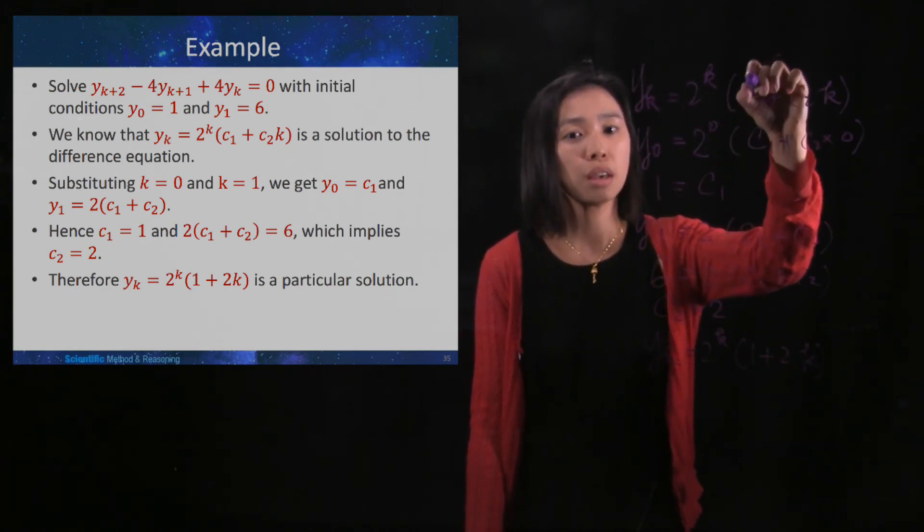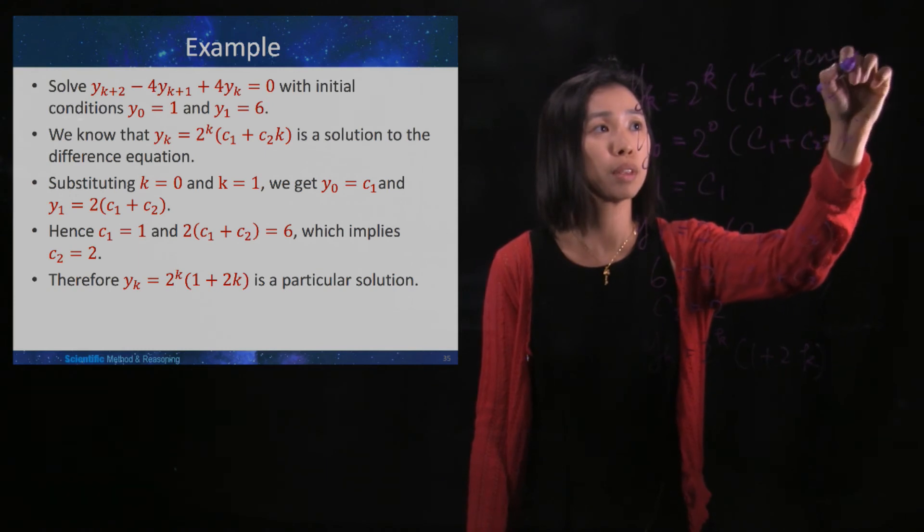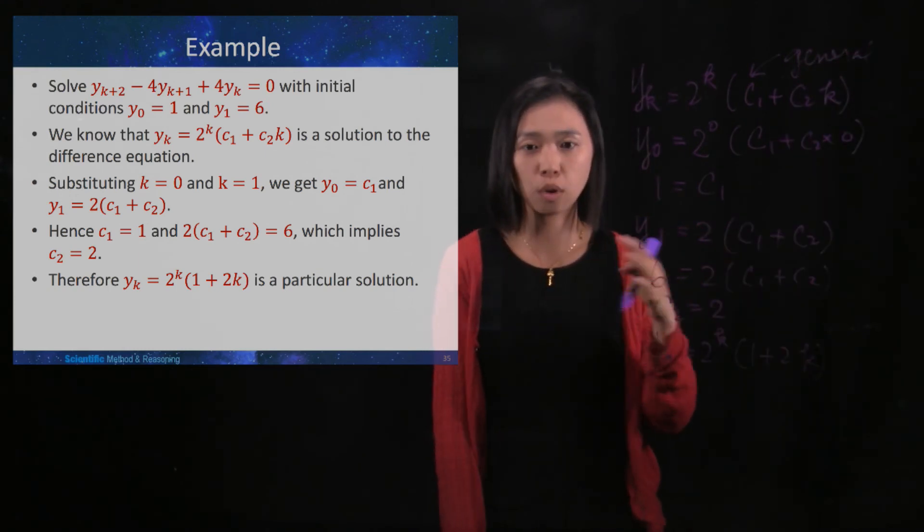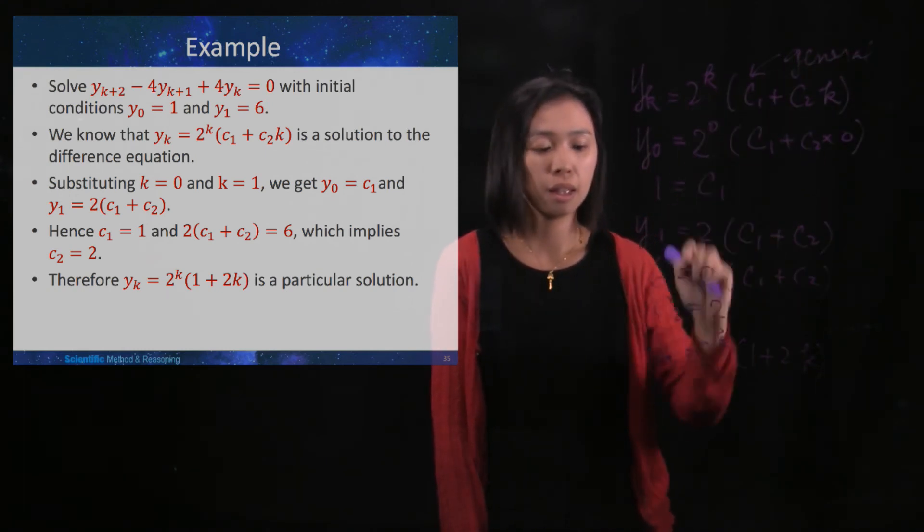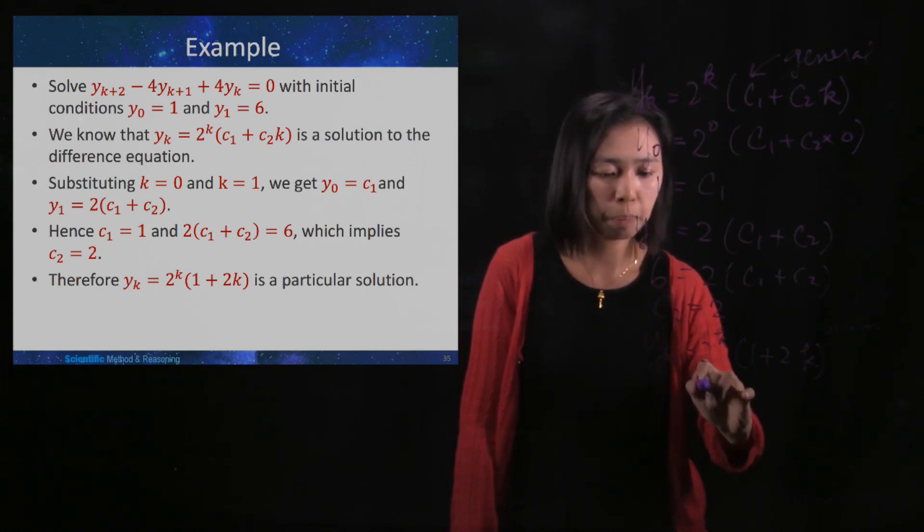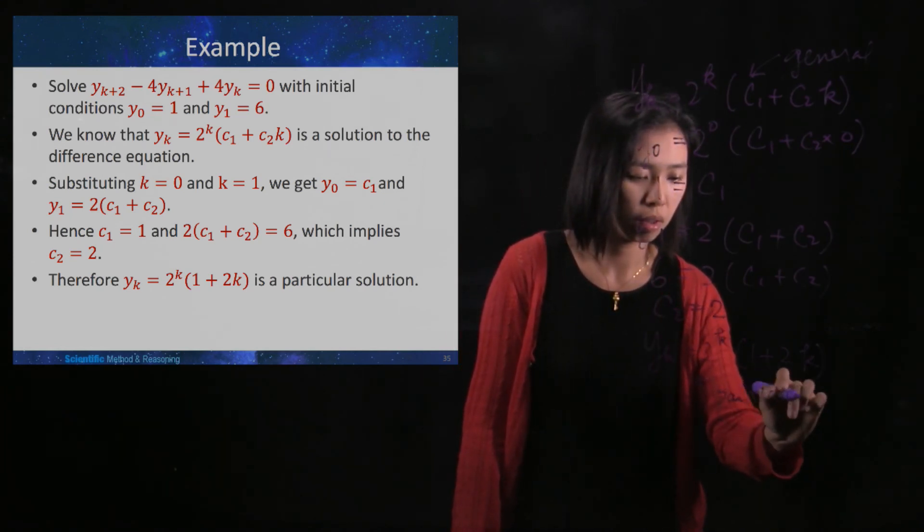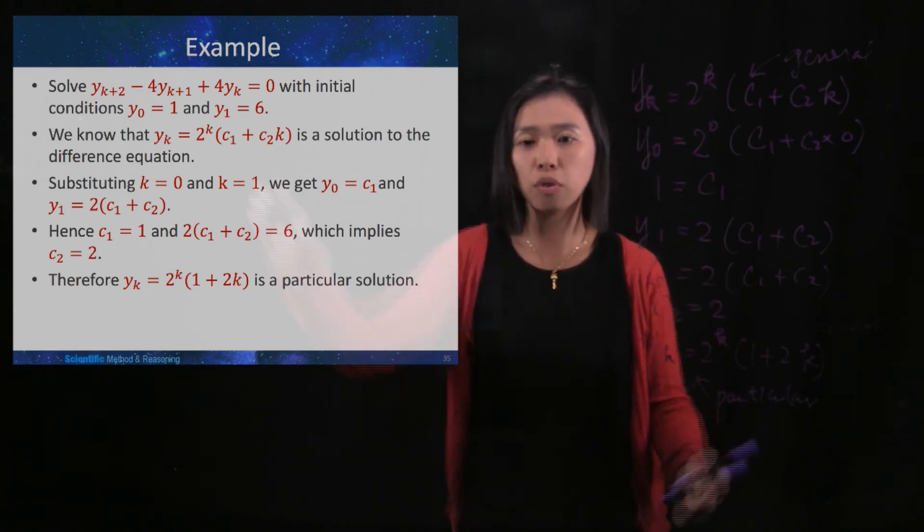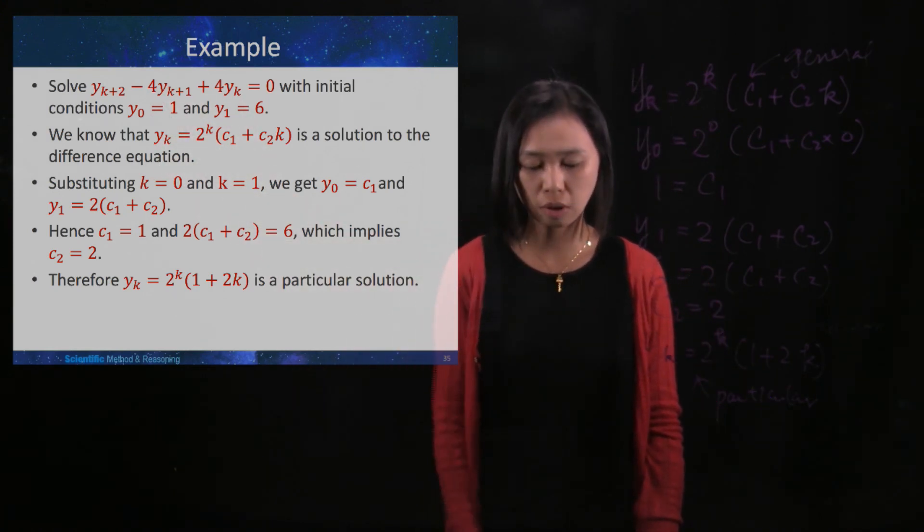And this is your general solution because there could be infinitely many c. And this would be your particular solution, and it only refers to these two initial conditions.